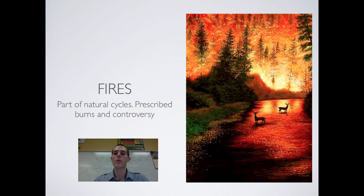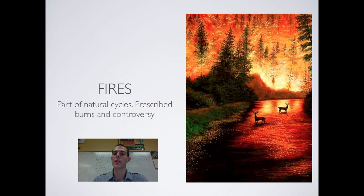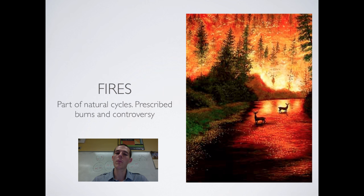For quite a while, the Forest Service operated out of a mindset of suppressing forest fires. The problem is that suppression allowed the buildup of brush, leading to more catastrophic fires when they did occur. So the Forest Service started employing prescribed burns — setting small controlled fires to eliminate extra underbrush and cycle nutrients — and has moved toward letting naturally lit fires burn while protecting humans and structures.